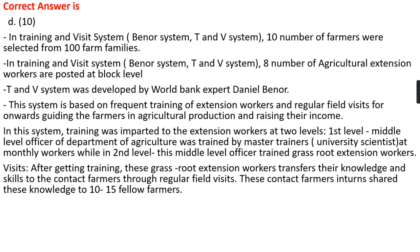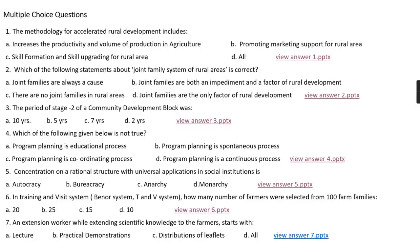In the Training and Visit system, 10 farmers were selected from 100 farm families, while eight agriculture extension workers are posted at the block level. This T&V system was developed by World Bank expert Daniel Benor. It is based on frequent training of extension workers and regular field visits for guiding farmers in agricultural production and raising their income. Training is imparted at two phases: first, middle-level officers of the Department of Agriculture are trained by a master trainer; then these middle-level officers train grassroot extension workers, who then transfer their knowledge and skills to contact farmers through regular field visits. These contact farmers in turn share this knowledge with 10 to 15 fellow farmers.